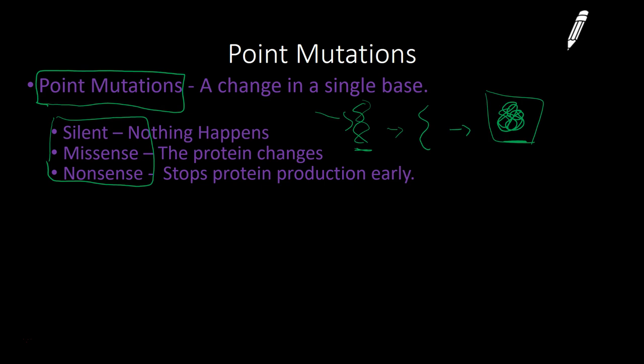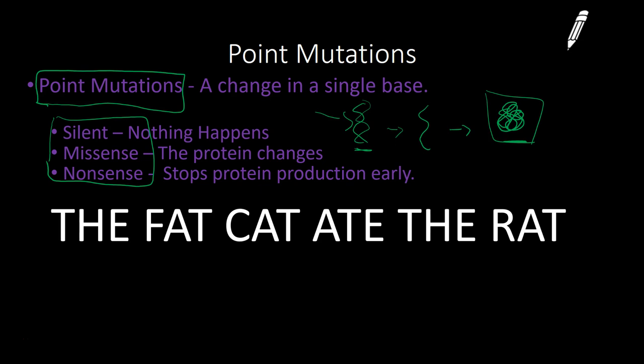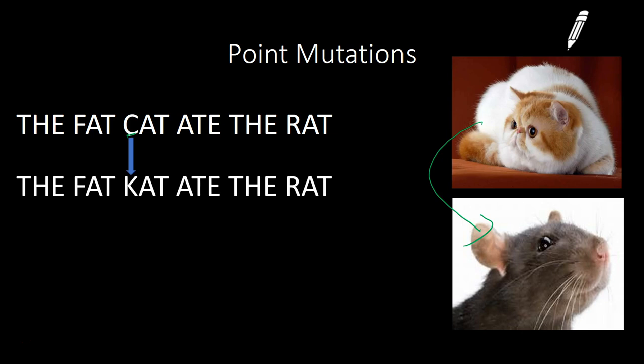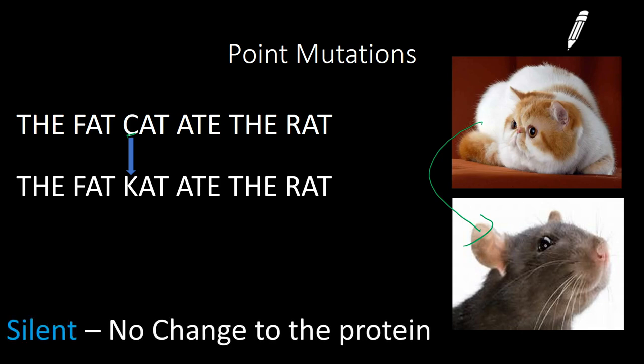As an analogy, consider the sentence 'The fat cat ate the rat.' Ribosomes read every three letters — the codons or triplets — so this sentence uses three-letter words to illustrate the concept. If I change the C in 'cat' to a K, and read 'the fat kat ate the rat,' it still has the same meaning. We would call that a silent mutation — there was no change to the protein; the meaning of the sentence did not change.